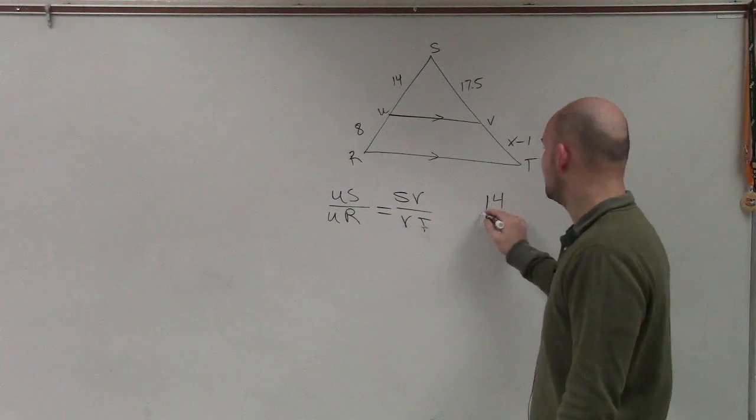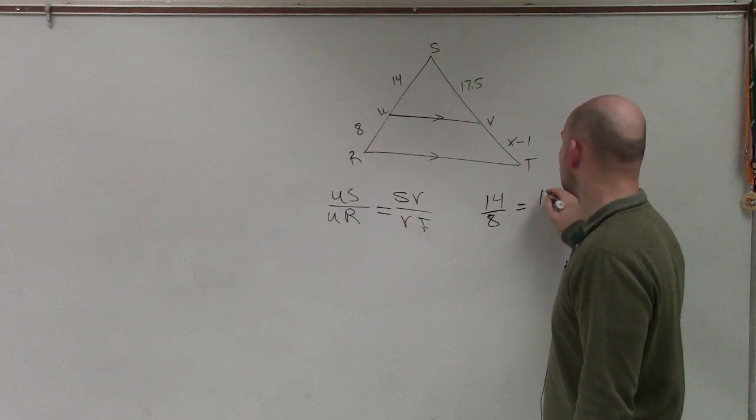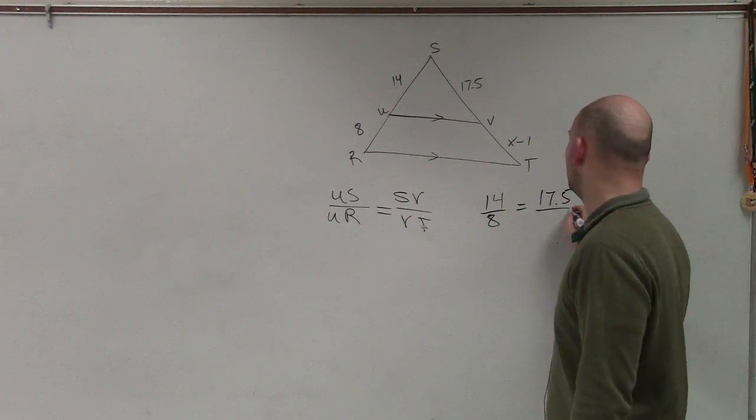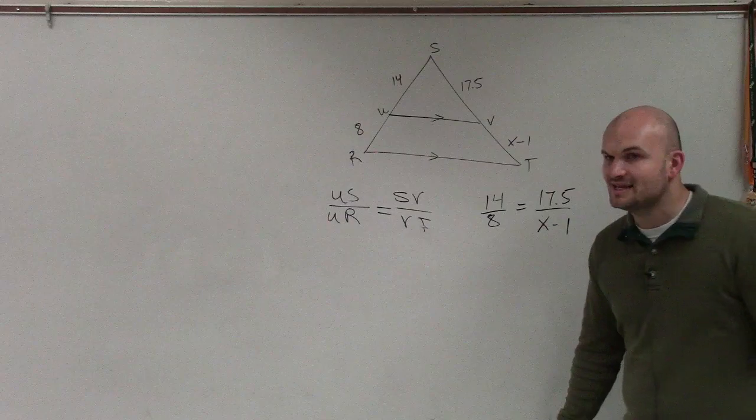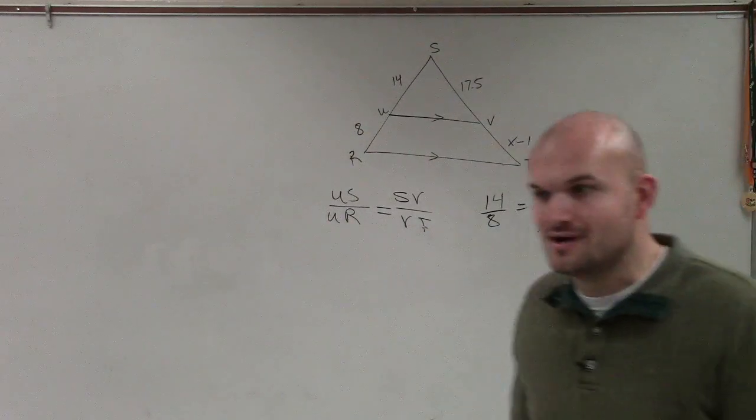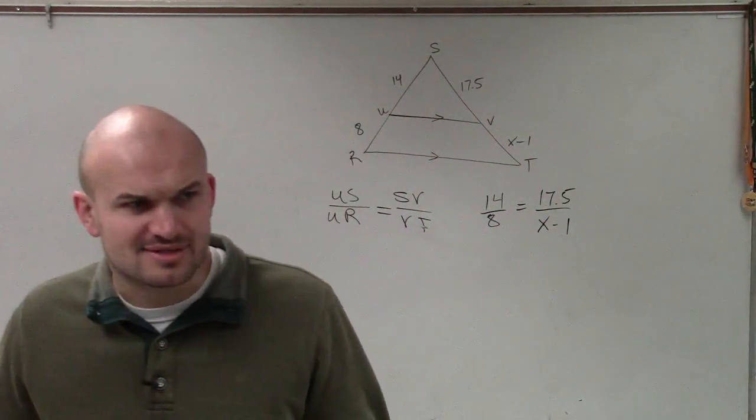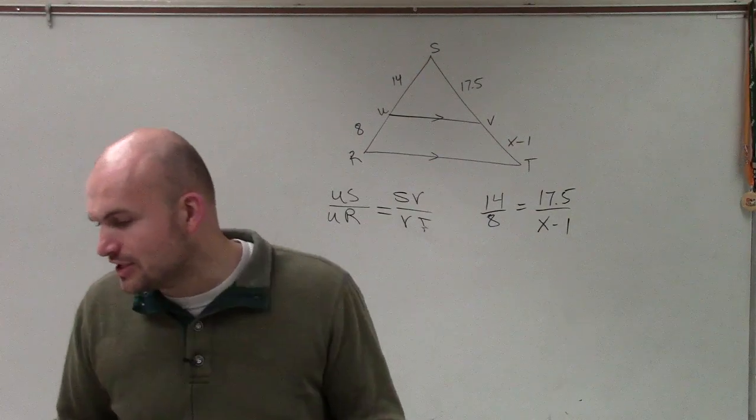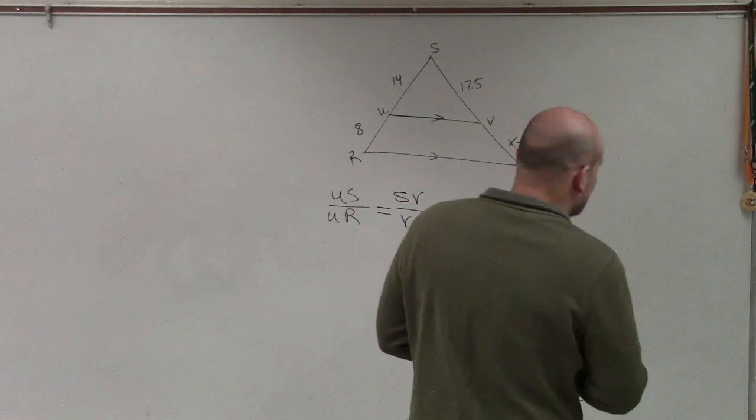ur is 8 equals 17.5 over x minus 1. Is that enough information for us to be able to solve this now? Yeah, of course. You just had to make sure that you had exactly the right theorem.